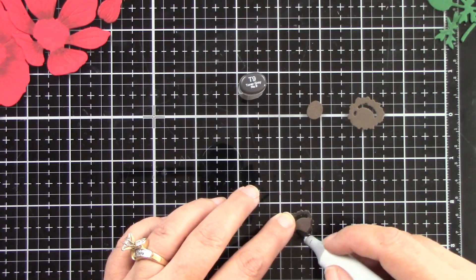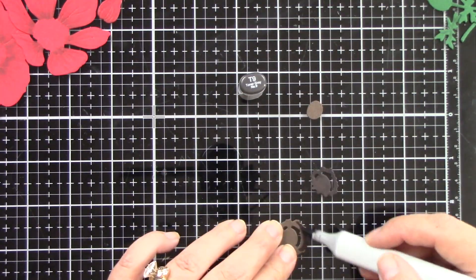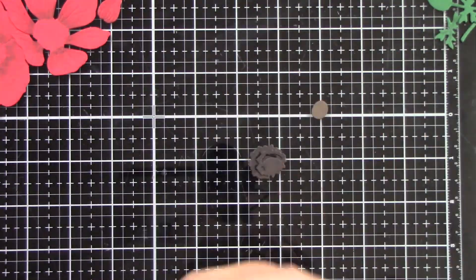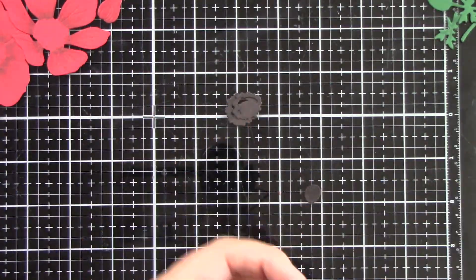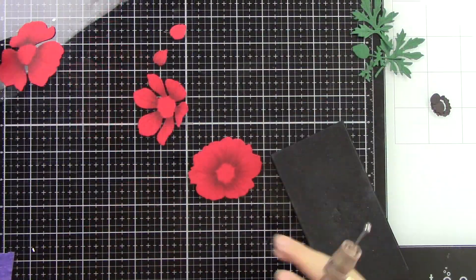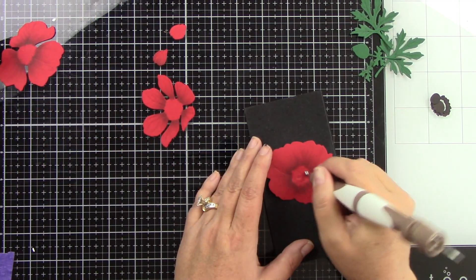For the centerpiece I am going to be coloring this with a T9 and a T10 but I did die cut that from dark brown cardstock. I did not want to die cut this from black cardstock because I felt like that was going to be a little bit too stark.